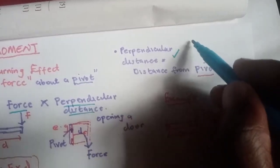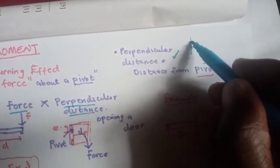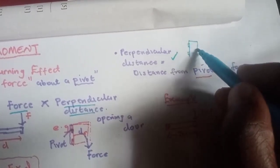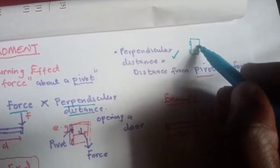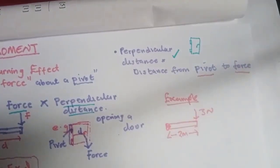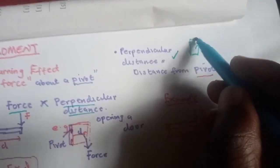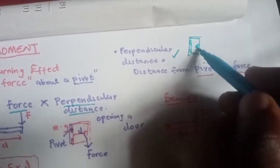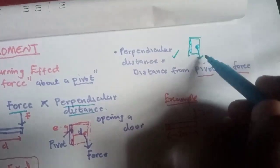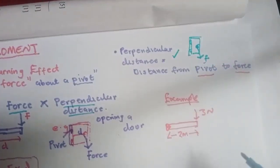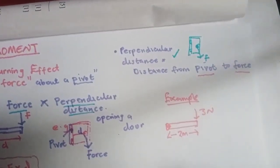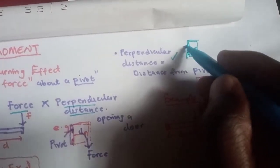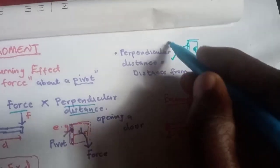Let's explain using a door. A door is usually attached somewhere — that's your pivot. You have the door knob here. When you want to open the door, you hold the knob and pull. This pulling is the force. Force is a pull or push. Now, you are pulling the door to open it. The point where the door is attached is where your pivot is.